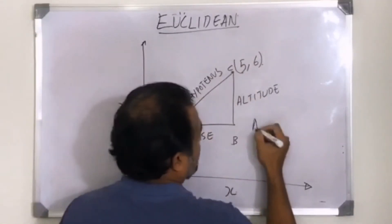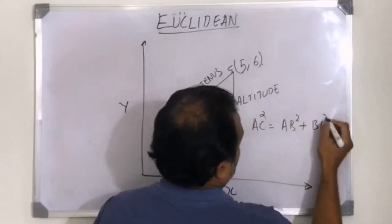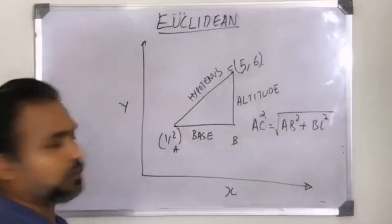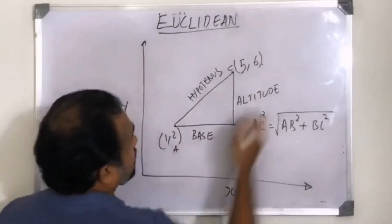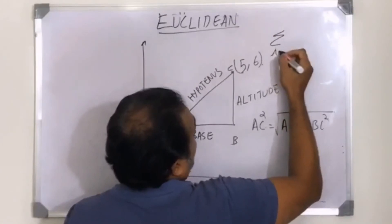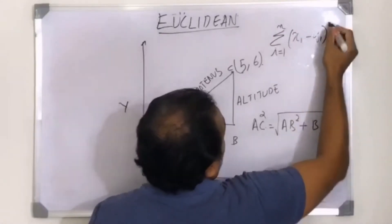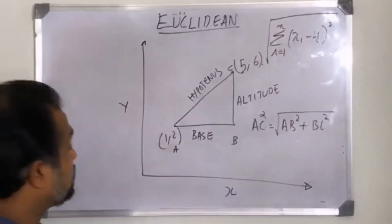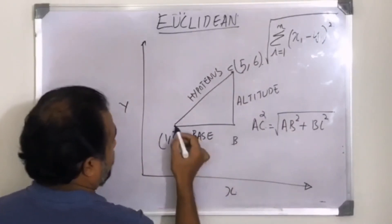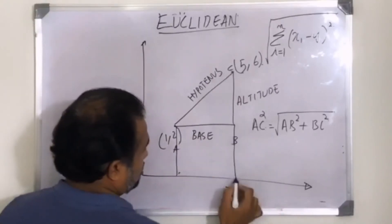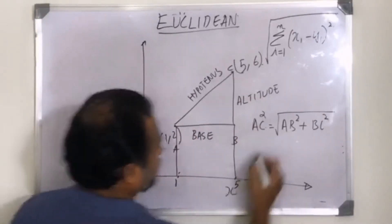We can use the Pythagorean theorem. We complete this as a right triangle: this is the base (AB), this is the altitude (BC), and this is the hypotenuse (AC). The formula is: AC² = AB² + BC², so AC equals the square root of AB² + BC². If I name the formula: it is sigma from i=1 to n of (xi − yi) squared, all under the square root.